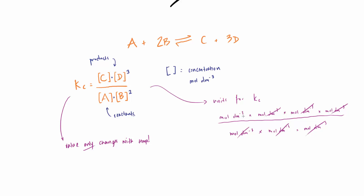If there were more terms on the bottom than the top, you could end up with mole to the minus one dm3, for example. The units really do vary. That covers the main theory of KC — it's not a huge amount. The other aspect is calculations.